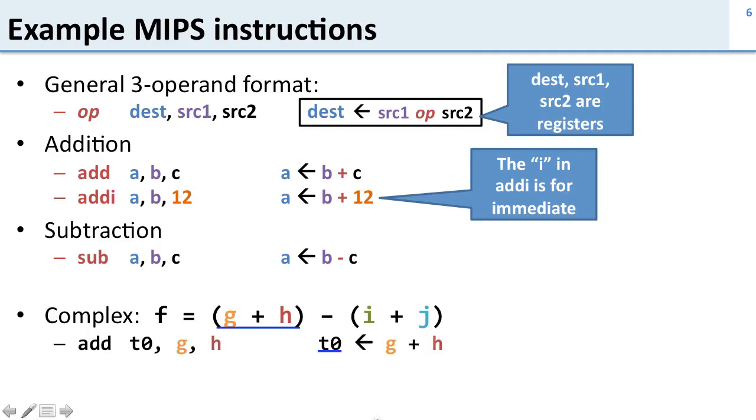So let's do the g plus h. So here's the instruction we're going to use for this. We're going to add t0 gh. So t0 here is a temporary register. This register is going to temporarily store the results of this part of the computation. We're then going to do the same part for the second half. So we'll have another temporary register which stores the results of i plus j and then finally we'll do the subtraction.